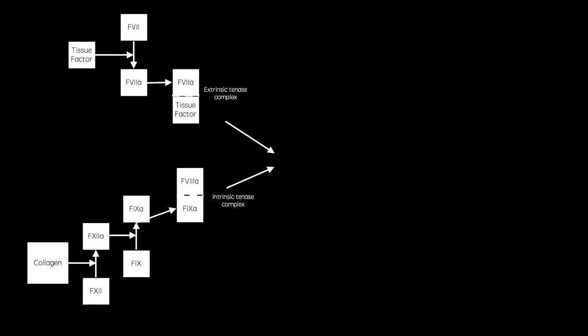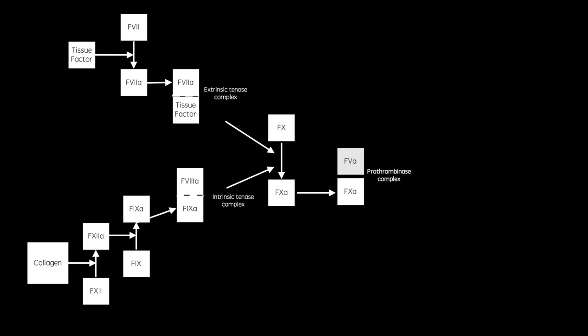I will now introduce the coagulation cascade. As in platelet aggregation, this pathway is triggered by the exposure of blood to unfamiliar substances. The exposure to collagen triggers the activation of factor 7, which goes on to activate factor 9, which along with its cofactor factor 8 forms the intrinsic tenase complex. Blood is also exposed to tissue factor, which activates factor 7, which along with tissue factor forms the extrinsic tenase complex. Both tenases are activated by calcium and subsequently activate factor 10, which along with its cofactor factor 5 forms the prothrombinase complex.